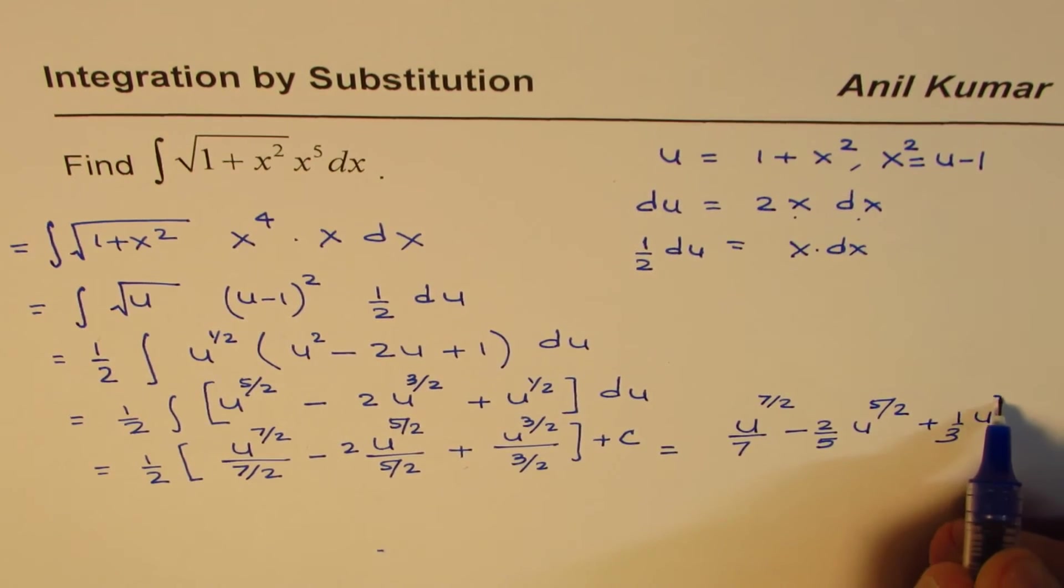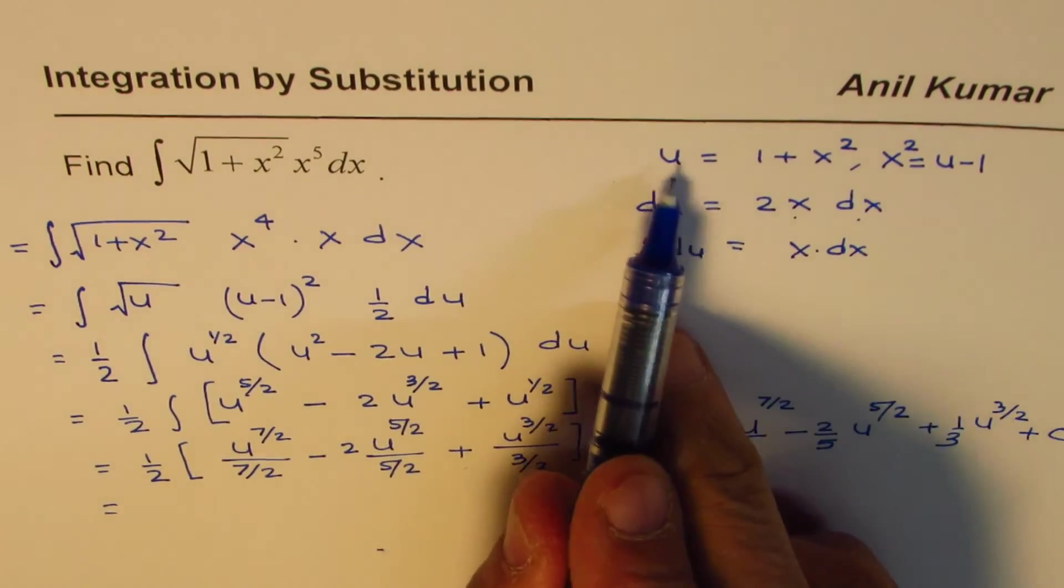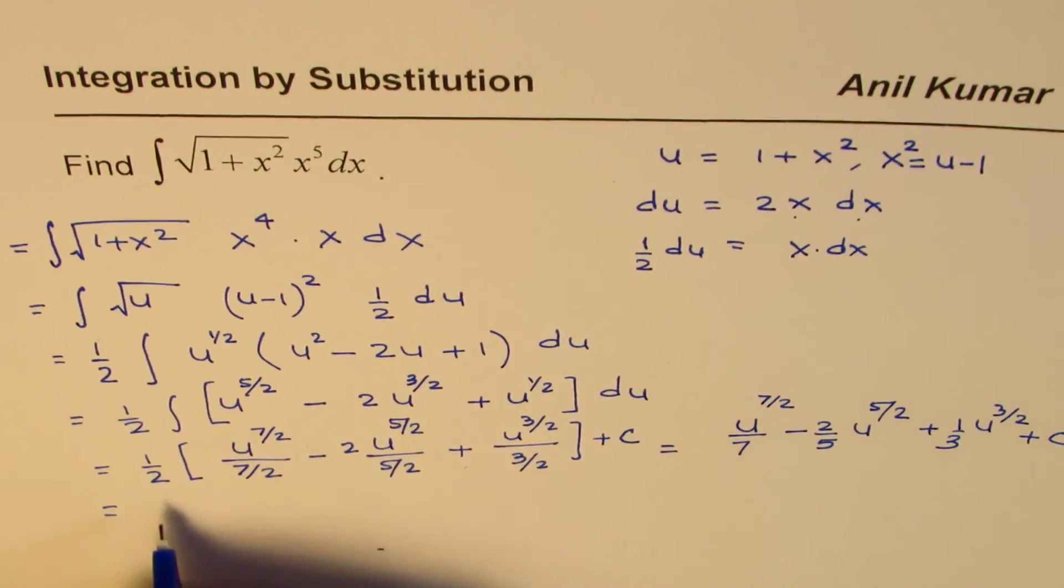Now this could be written as—u is 1 plus x squared—so we'll write 1 plus x squared to the power of 7/2.